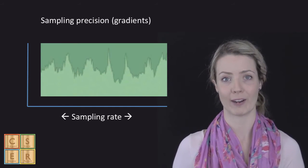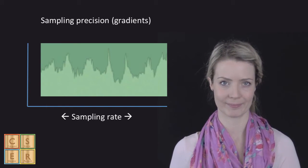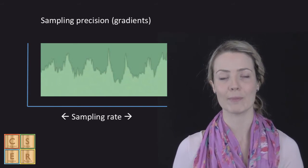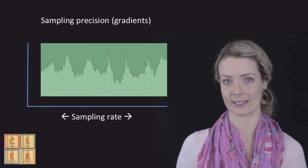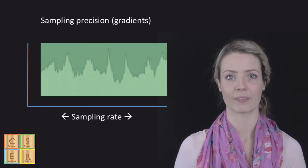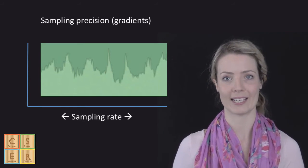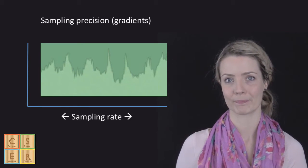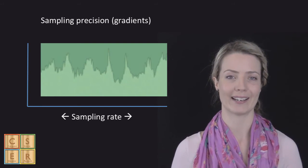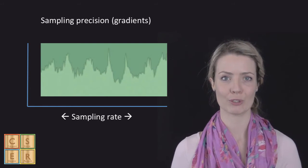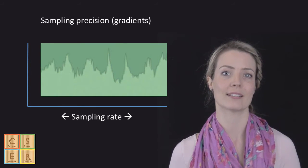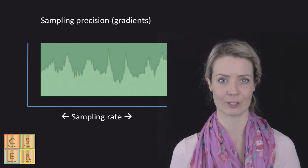This is done by sampling rate and sampling precision. The sampling rate involves how many samples are taken per second. Sampling precision involves how many different gradations are possible. By increasing the sampling rate and precision, you can reduce the likelihood of errors and produce a sound that is closer to perfect.